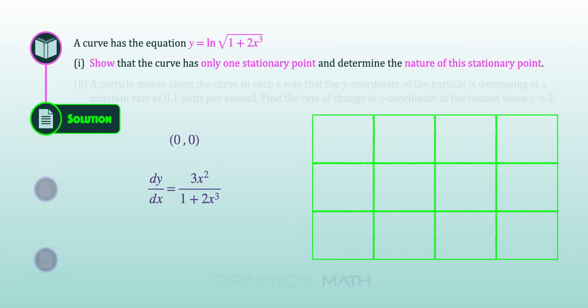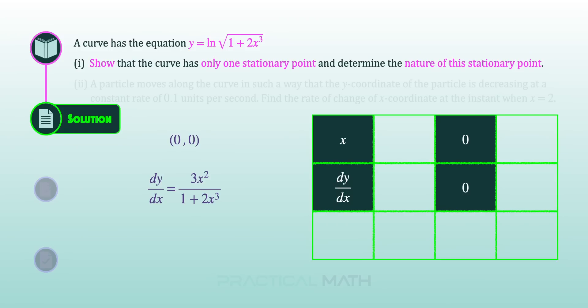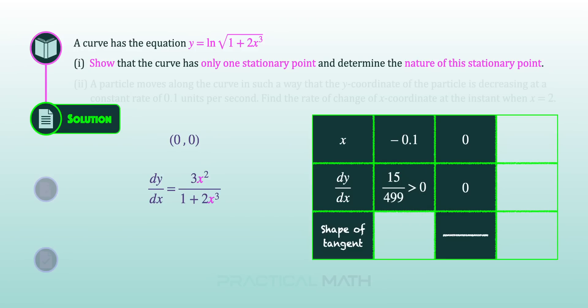We will now conduct a first derivative test to determine whether the stationary point (0, 0) is a maximum, a minimum, or a stationary point of inflection. When x = 0, dy/dx is also 0, and the tangent is horizontal. Using a valid point to the left of our stationary value, when x = −0.1, replacing it into our derivative function gives dy/dx equal to 15 over 499, which is greater than 0.